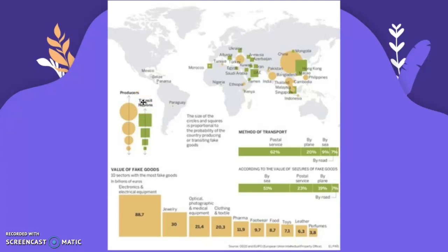Transiting means the trade or movement of counterfeit goods — that's what the squares indicate. It's quite high in China and Hong Kong. This is honestly a really bad diagram. That's another thing for exams: you have to know how to evaluate diagrams.